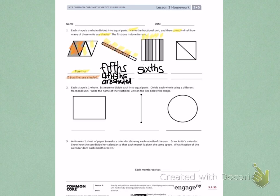When I go back, I'm going to count what is shaded. 1 sixth, 2 sixths, 3 sixths. 3 sixths are shaded.